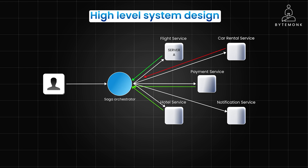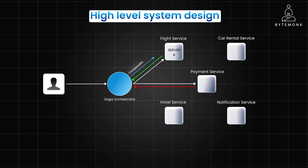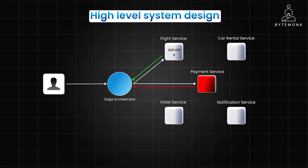And if any step fails — for example, flight reservation failed or payment failed — the saga orchestrator triggers compensating transactions to undo any completed steps. For example, if flight reservation failed, no further actions are taken and a failure notification is sent. If payment failed, the flight service is instructed to release the reserved seat. Or if hotel booking failed, the payment service may be instructed to refund the payment and the flight service may be instructed to release the reserved seat.